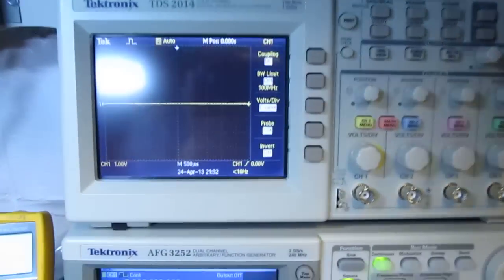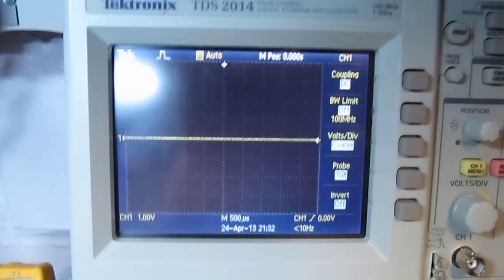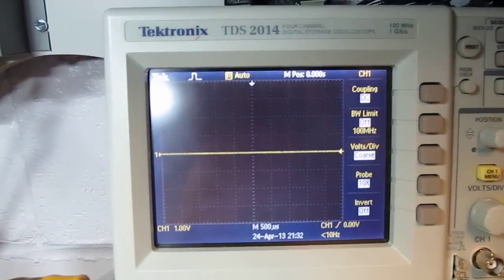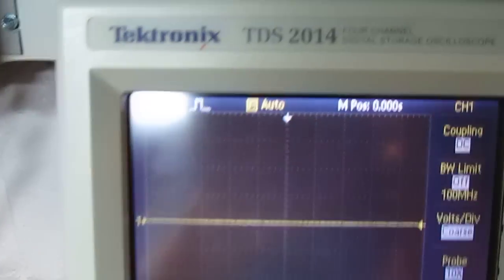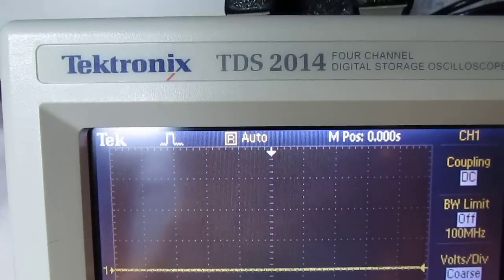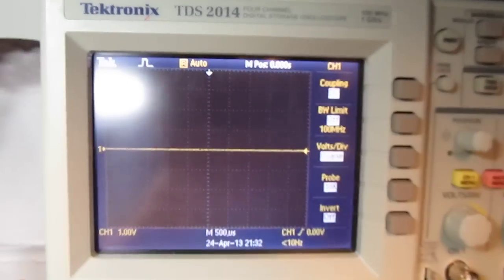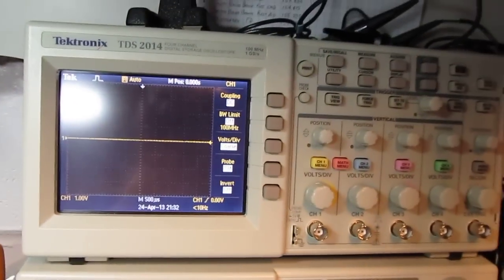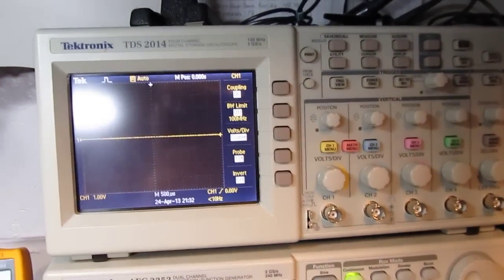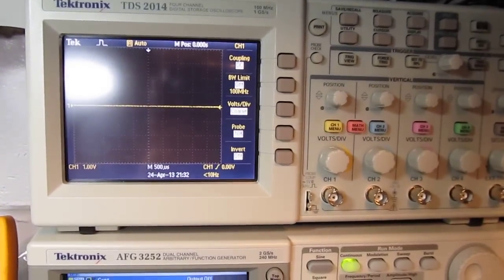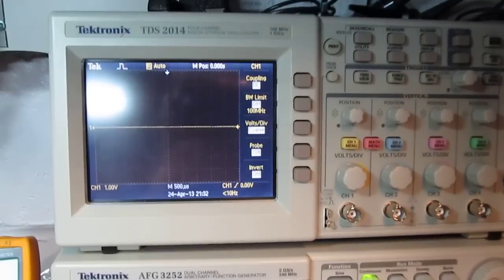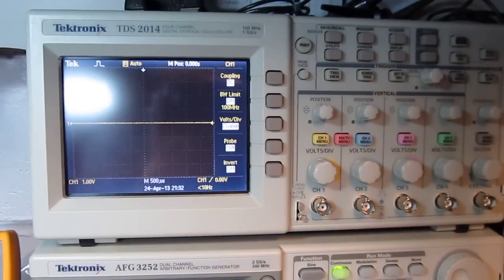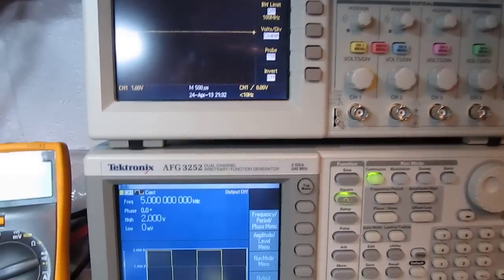Down here is the only Tektronix digital scope that I have here in the lab. A reasonably older model, probably eight to 10 years old now, Tektronix TDS 2014, 100 megahertz four channel. Nice little scope, but it's about 10 year old technology compared to some of the new modern digital scopes that are out there.